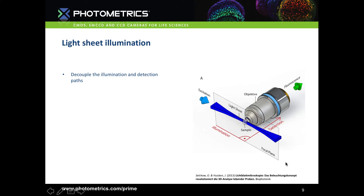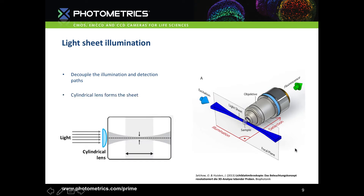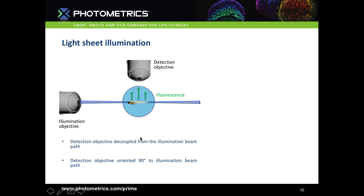We achieve this by decoupling the illumination and detection paths. The excitation beam comes in through an objective on the side, generating the lightsheet. At a 90 degree angle to the illumination is where we have our detection objective. We form the sheet using a cylindrical lens in the light path, which causes the beam to converge in the middle and diverge out again — this is the beam waist — forming a sheet of light through the sample, with fluorescence detected through the detection objective above.